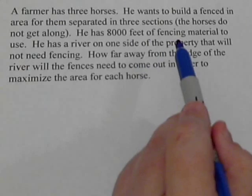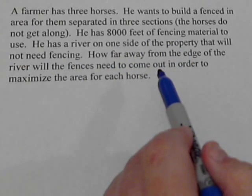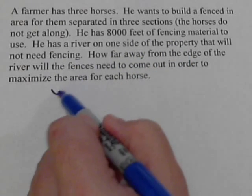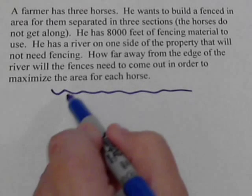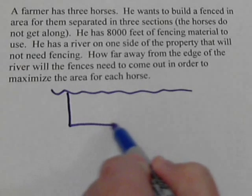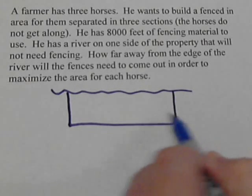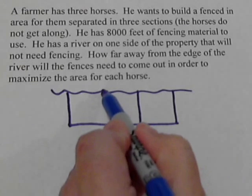He's got 8,000 feet of fencing to use and a river on one side of the property. So if we draw a little sketch, there's our river. And we're going to draw a rectangular area and split it into three sections.